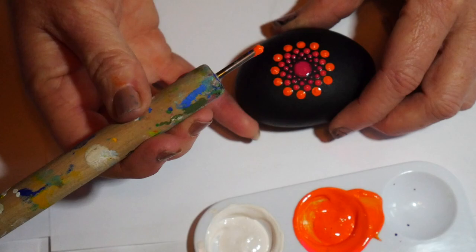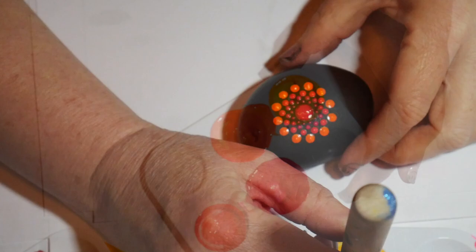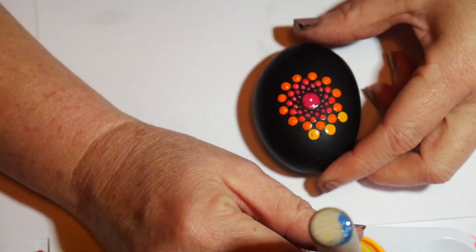After I've gotten all the way around, I'm going to let that dry for a little bit while I mix up some more paint. I'm going to be going to a yellow, but I'm going to make a transitional color by adding a little bit of the orange to it, and then getting a slightly larger dotting tool and making another row.